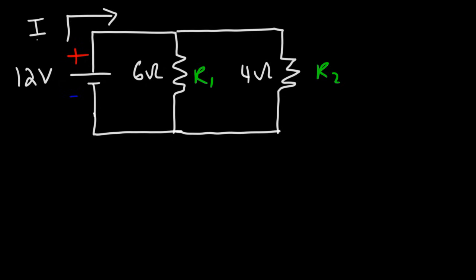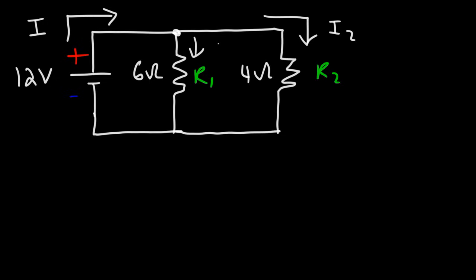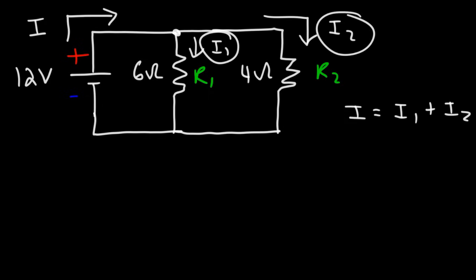Calculate the amount of current that's going to flow away from the battery. Keep in mind this is conventional current, which is in the opposite direction of electron flow. The current will split off into two directions: the current that flows through resistor 2 we'll call i2, and the current that flows through resistor 1 is i1. The current flowing from the battery is the sum of i1 and i2.